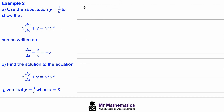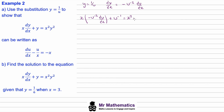Let y equal 1/u. Then dy/dx, differentiating, gives minus 1/u squared, or minus u to the power of negative 2. Doing this implicitly it becomes multiplied by du/dx. Substituting into the differential equation: x times (minus u to the negative 2) du/dx plus u to the negative 1 equals x squared times u to the negative 2 (since y squared gives u to the negative 2).